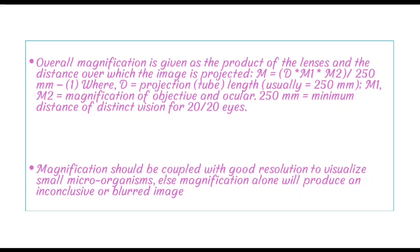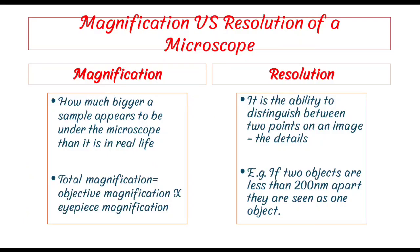What is the resolution? What is the ability of the microscope? The microscope can show two points as separate. If two objects are less than 200 nanometers apart, the microscope will show them as one object. But if the distance is more than 200 nanometers, the microscope will show them as separate objects.